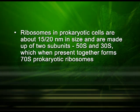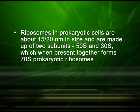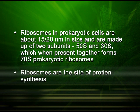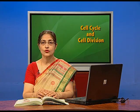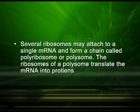Ribosomes in a prokaryotic cell are about 15 to 20 nanometers in size and are made up of two subunits: 50S and 30S respectively. These two, when present together, form a 70S prokaryotic ribosome. Ribosomes are the site of protein synthesis. Several ribosomes may be attached to a single mRNA to form a chain known as a polyribosome or polysome. The ribosomes of a polysome translate the mRNA into proteins.